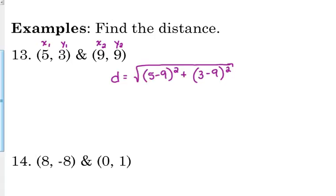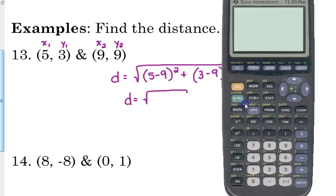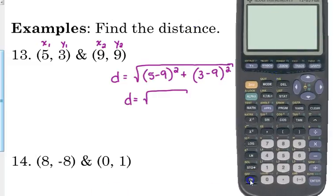Now, I suggest that you leave the square root. You can type everything else in except for the square root. So parentheses, 5 minus 9 squared plus parentheses, 3 minus 9 squared.